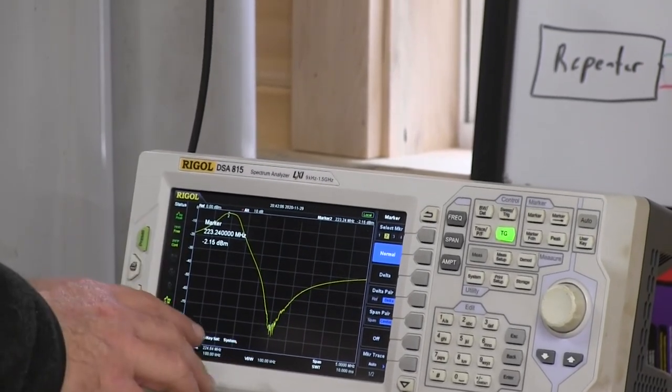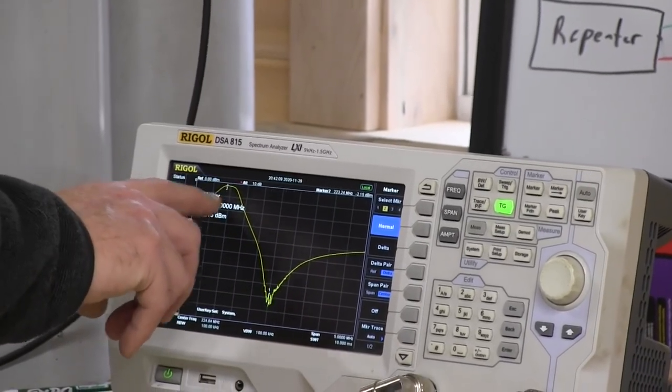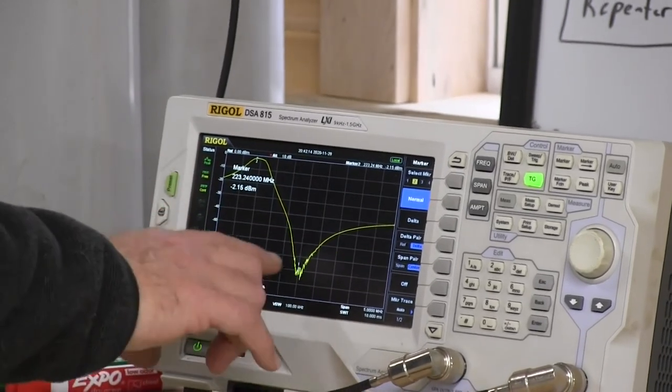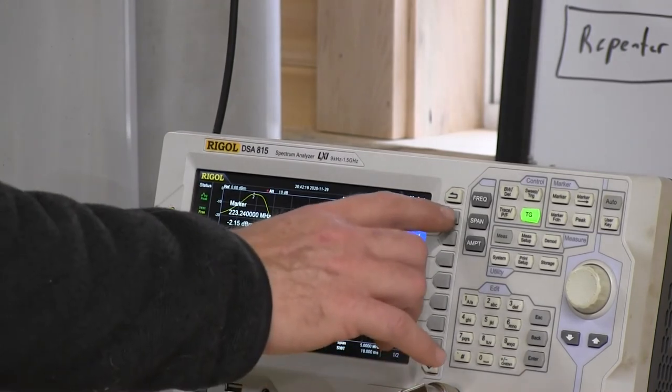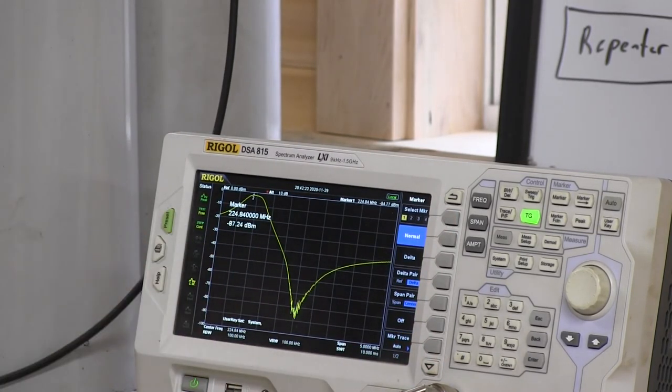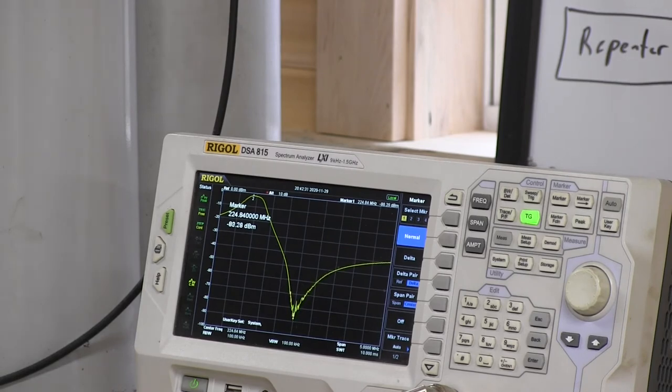We're probably going to call that good on that side. So we're going to span back out so you can see what we've done. We've got our pass frequency at the top and we're losing 2.15 dB of signal coming in. We've got our reject frequency down bottom and we've got around 85 dB of rejection. We're pretty happy with that. We're going to do the other side of the cans now. We'll probably fast forward through that one and then come back and recap.